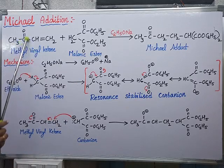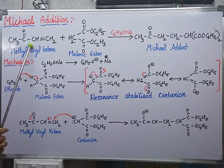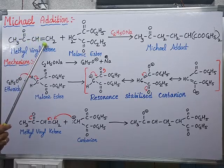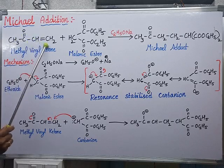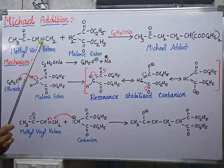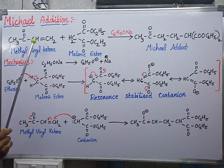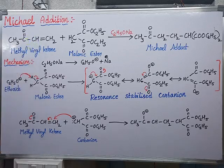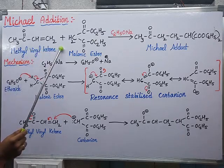In the alpha-beta unsaturated ketone, there is a carbonyl functional group. The carbon beside the carbonyl is called alpha, and next to that is beta. Between these two carbons there is an unsaturation, so it is called an alpha-beta unsaturated compound.